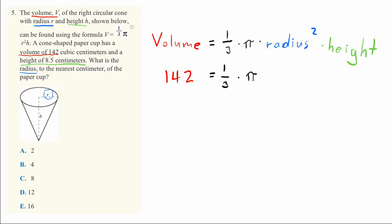One over three times pi times radius - we don't know the radius, so we'll use the abbreviation R. The height they told us was 8.5 centimeters, so times 8.5.